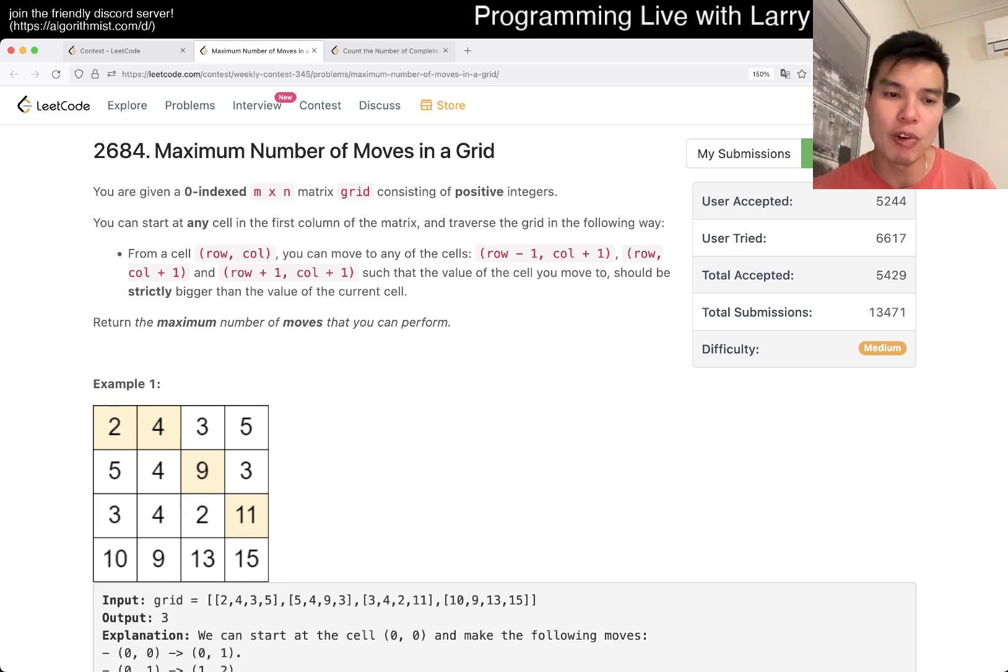But the core part about this problem is just that it's a dynamic programming thing. The way to figure it out is that this entire graph, implicit or explicit depending on how you want to think about it, is a DAG. You can only move in one direction, there are no cycles. And it becomes the longest path in a DAG, which you can do with dynamic programming.